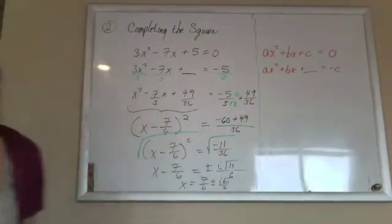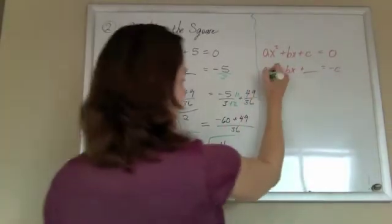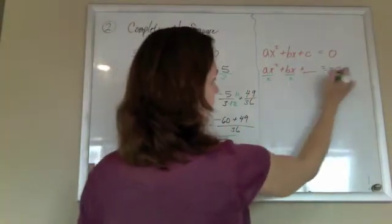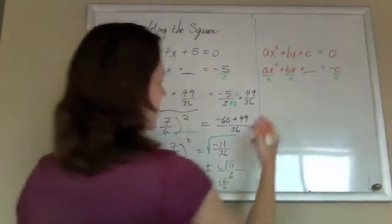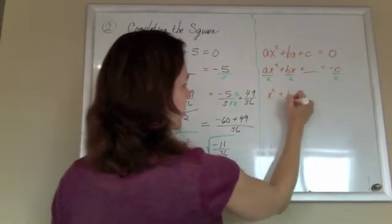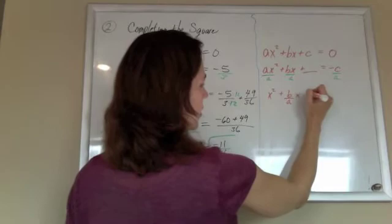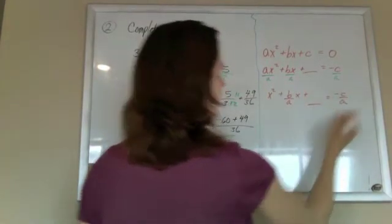And again, I don't like that a in front of my x squared, so I'm going to multivide everybody by a. So I'm left with x squared plus b over ax, and I'm going to add something here, equals negative c over a.